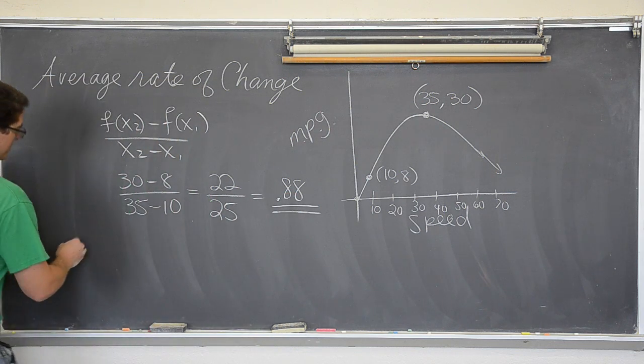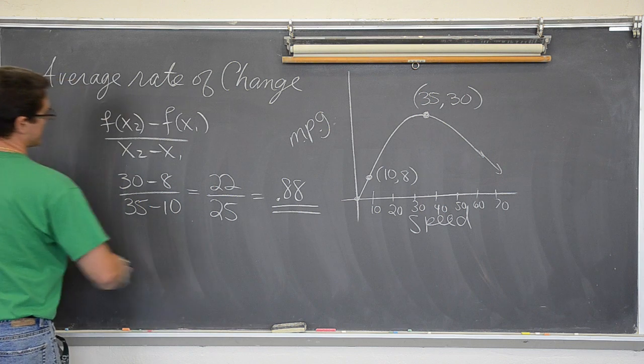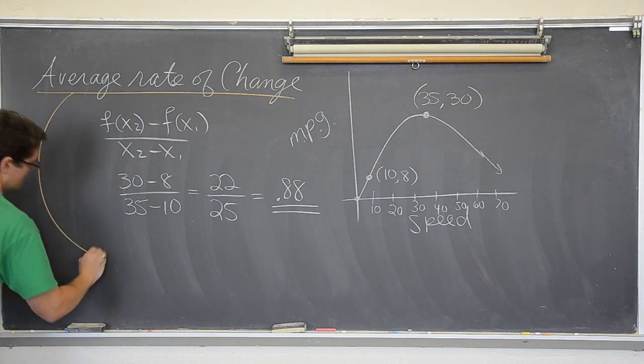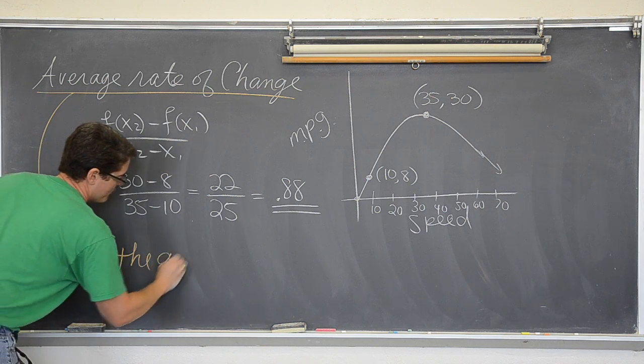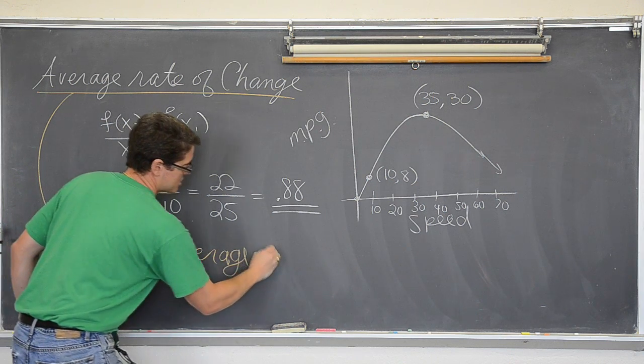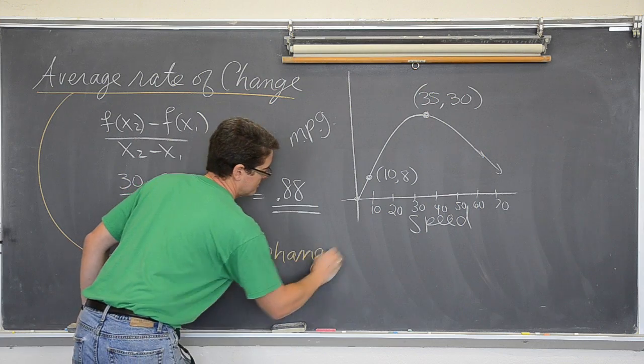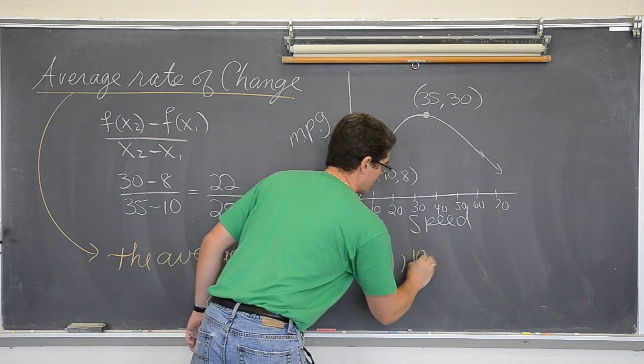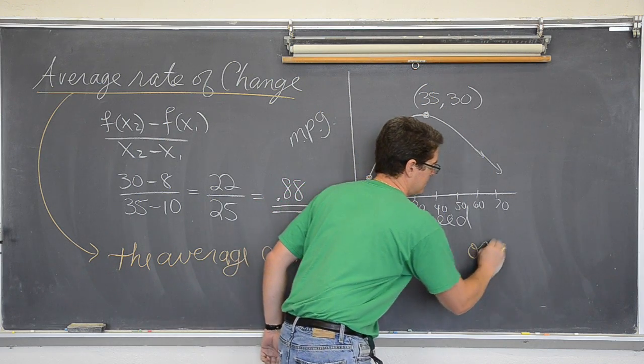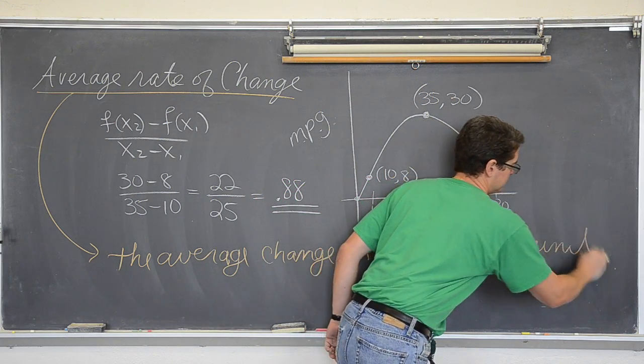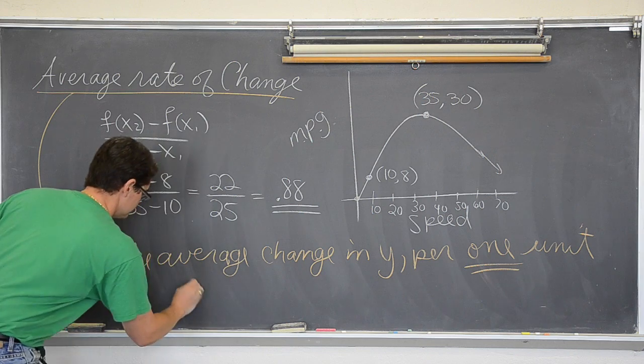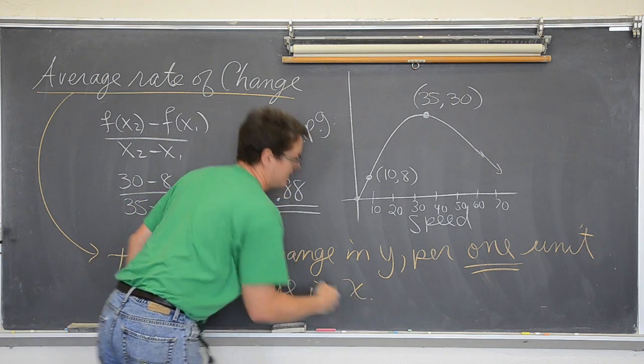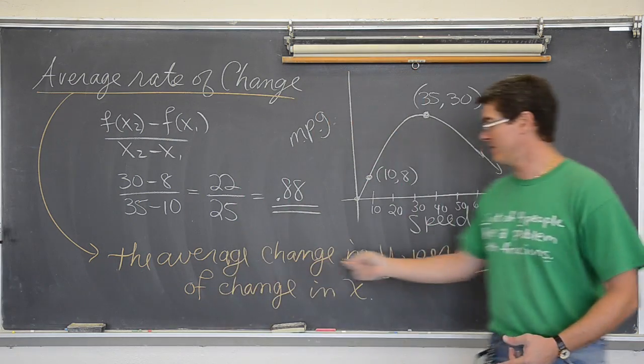The real definition of slope, or average rate of change, is the average change in y, which in this problem is going to be miles per gallon, per one unit of change in x.